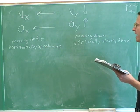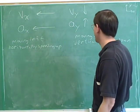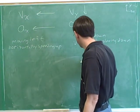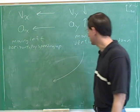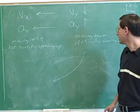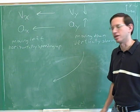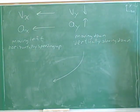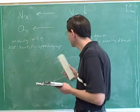I also asked you to draw the path. We know the object is moving left and moving down, so we can draw the path of the object like this — it's always moving down and to the left.